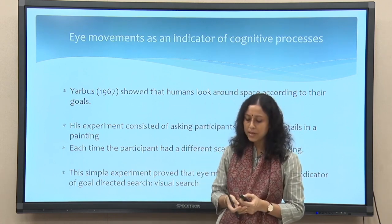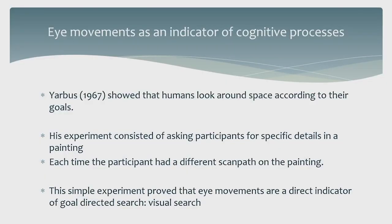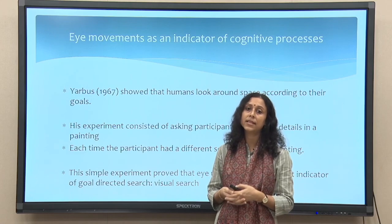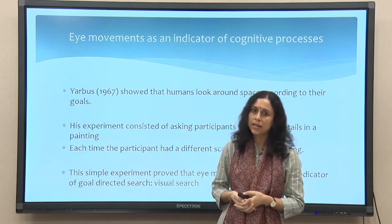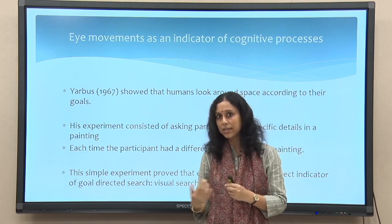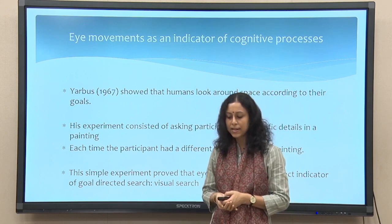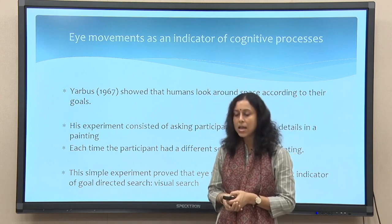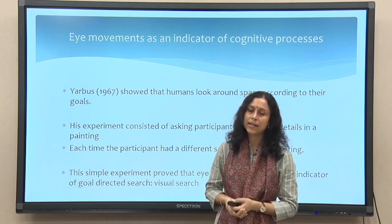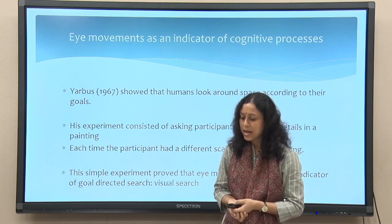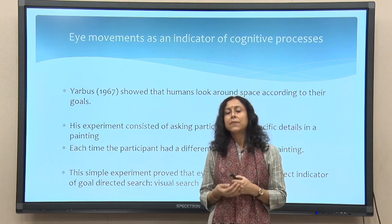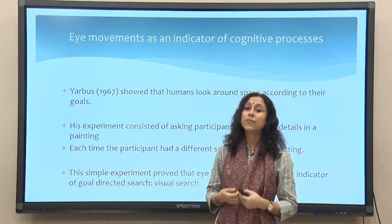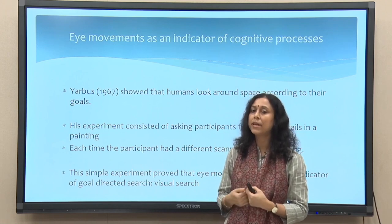What Yarbus basically did was ask participants for specific details in a painting. The participants were looking at a particular painting and then were asked specific details. When asked for a detail, the participant would look for that particular information in the visual display. Each time the participant had a different scan path on the painting. Scan path is related to the eye tracker as a mechanism. Each time there was a different question, the participant was looking for an answer, which is goal-directed behavior.